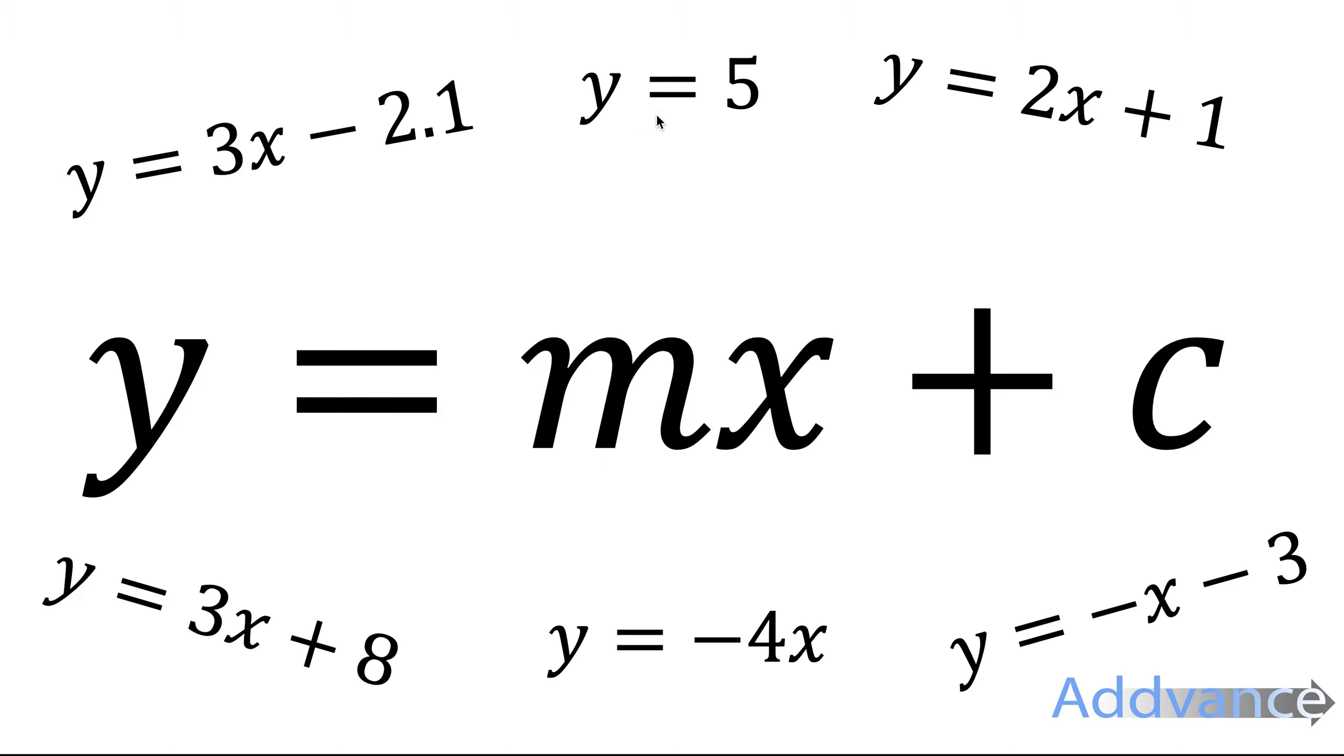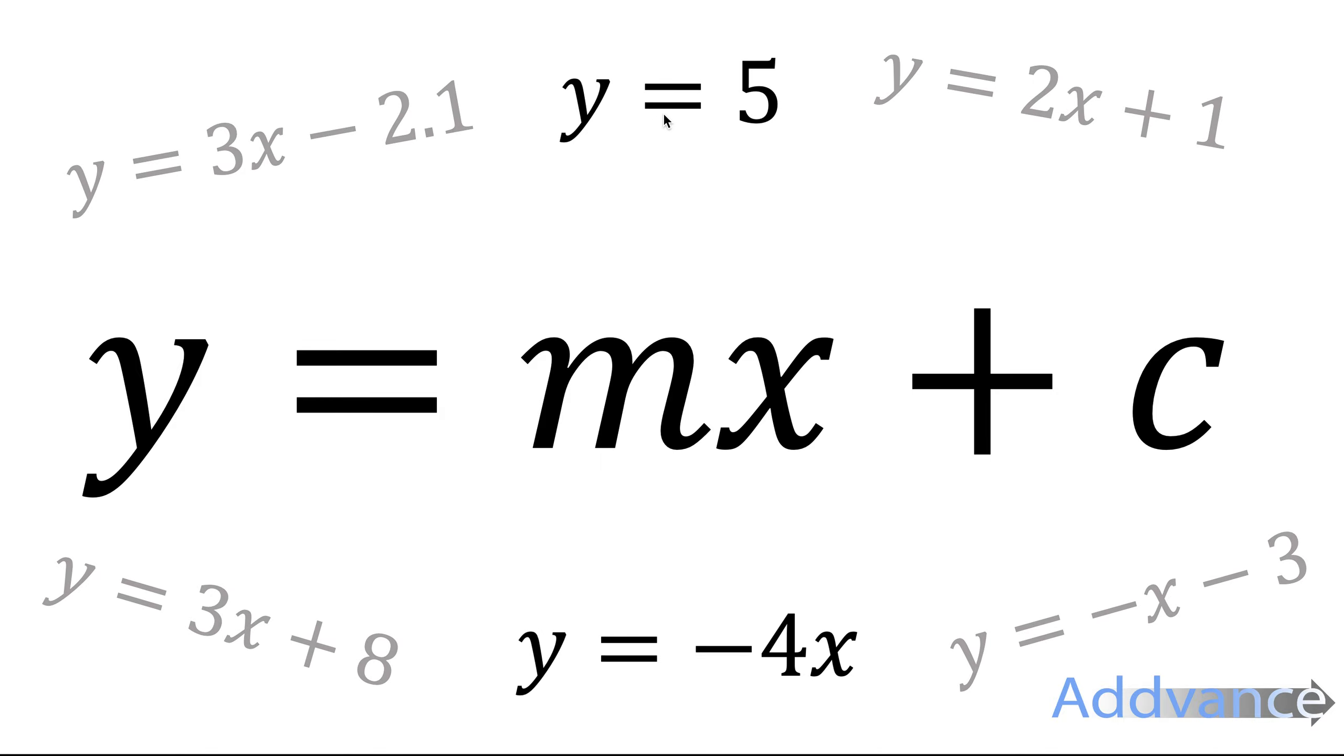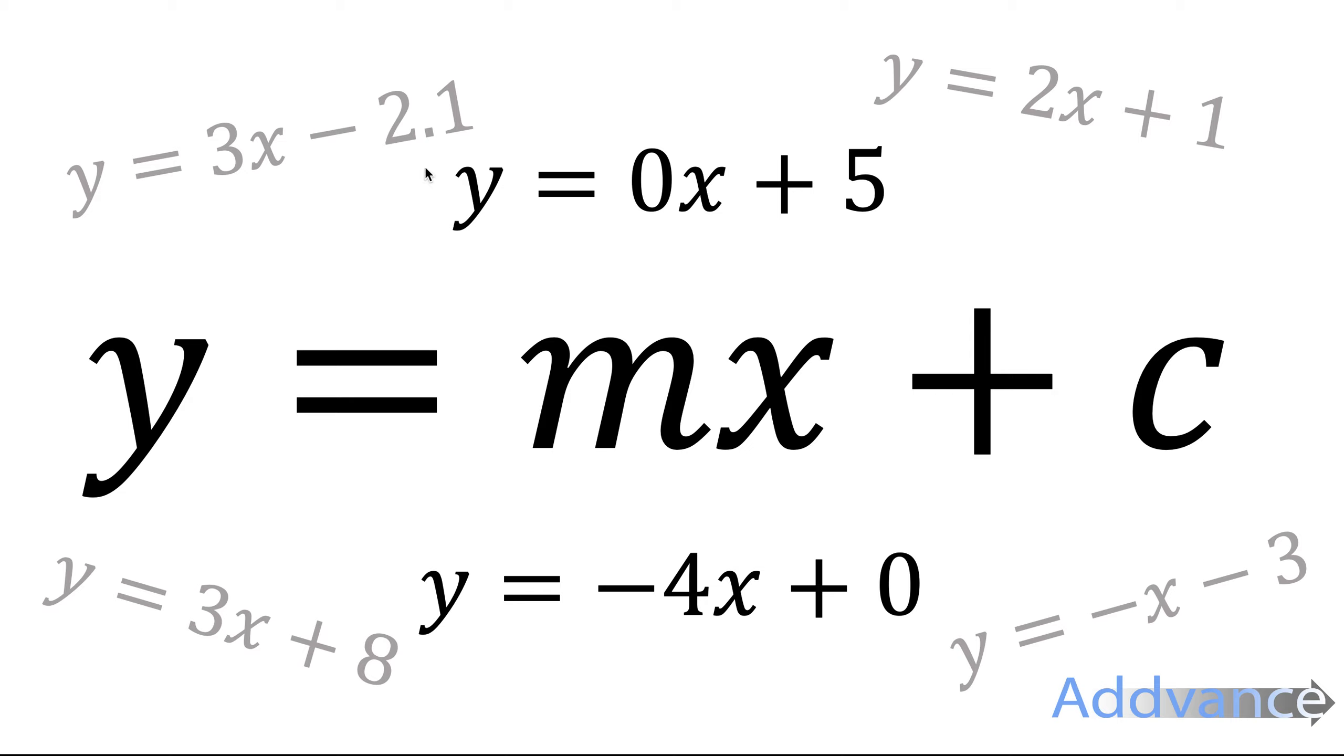So what we do for y equals 5, we make that into y equals 0x plus 5. The 0x just disappears, but if you wanted it in the form mx plus c, we can make it a 0x.